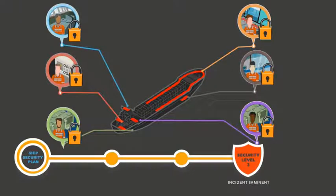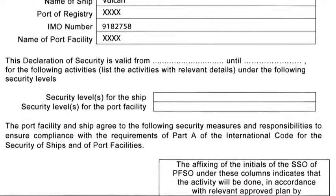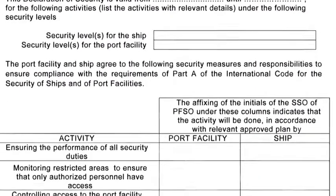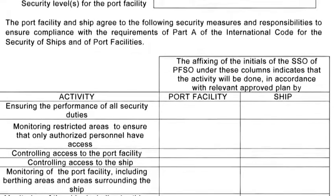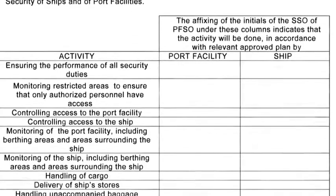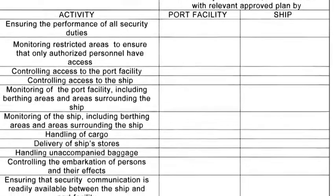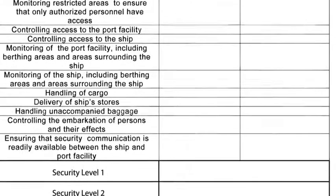When completing the declaration of security, the ship and port facility security officers agree on the means of communication in case of an emergency. The current security level determines the frequency by which this is checked.